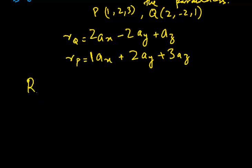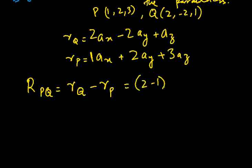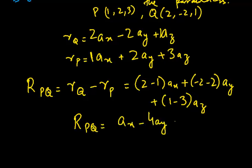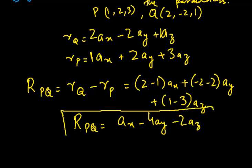To find r_PQ from P to Q, we compute r_Q minus r_P: (2-1)a_x plus (-2-2)a_y plus (1-3)a_z. This gives us r_PQ equal to a_x minus 4a_y minus 2a_z. This is our resultant vector.